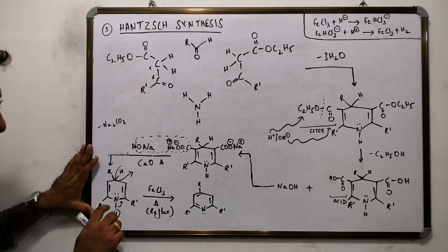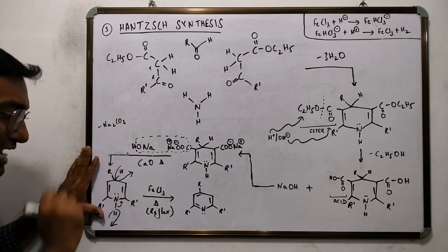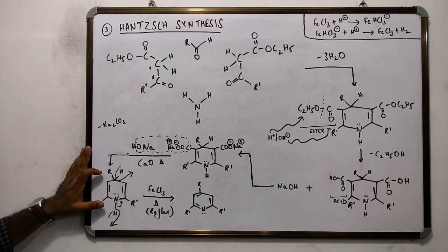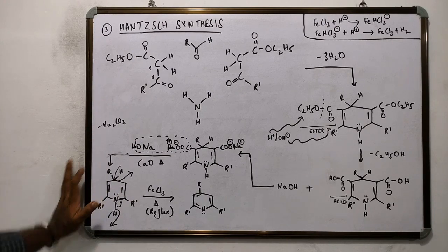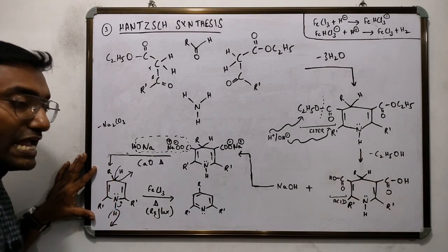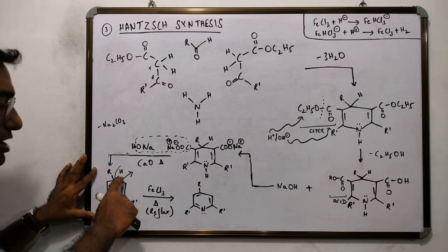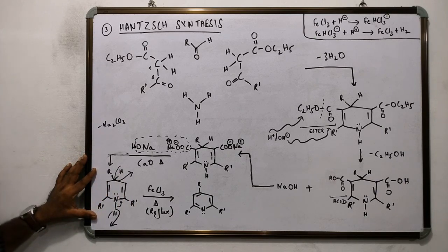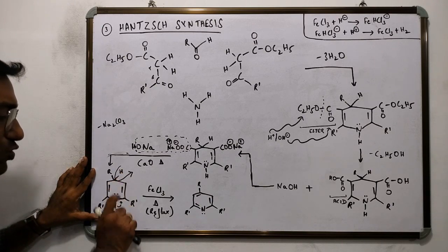To synthesize pyridine from 1,4-dihydropyridine, one needs to remove 2 hydrogen atoms and a pair of electrons. That is, one needs to use a dehydrogenating or an oxidizing agent for this purpose. A mild oxidizing agent is enough, as one needs to remove only 2 hydrogen atoms.